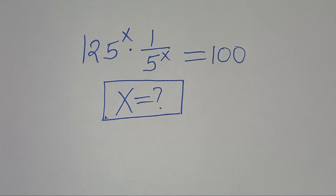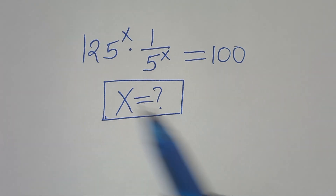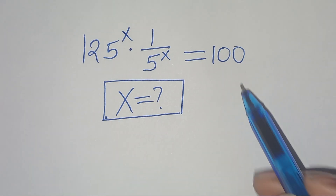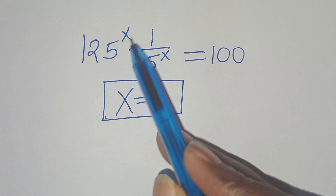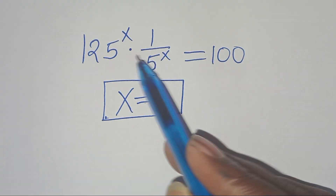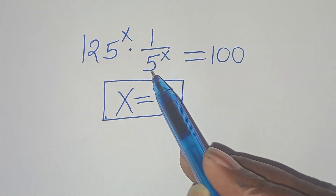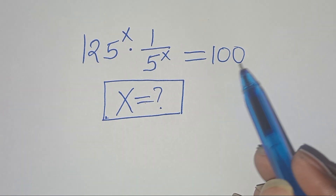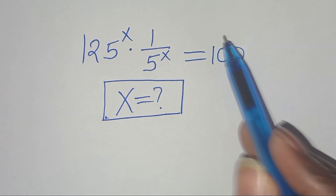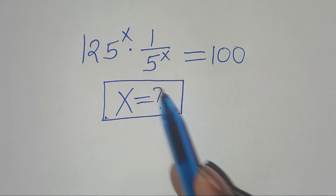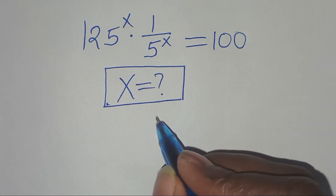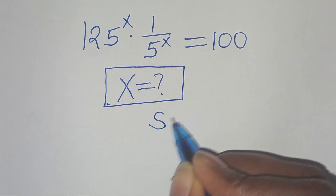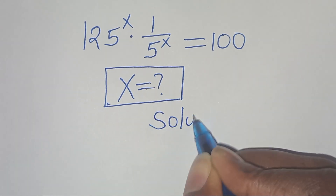Welcome everyone. We'll solve this exponential question: 125 raised to the power of x times 1 over 5 to the power of x equals 100. What is the value of x? Let's provide a solution.